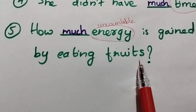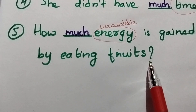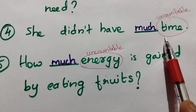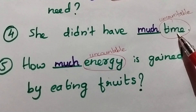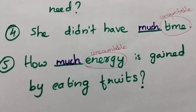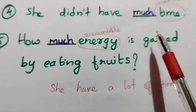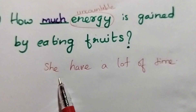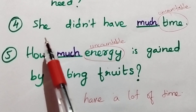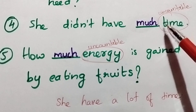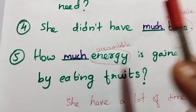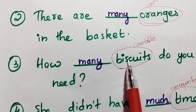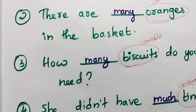During most of the time, 'much' is used in negative or interrogative sentences. 'How much energy is gained by eating fruits?' is an interrogative sentence, so 'much' is used. 'She didn't have much time' is a negative sentence — 'much' is used there too. When the sentence is positive, you'd say 'she has a lot of time,' but in negative form: 'she didn't have much time.' So much is used mostly in interrogative and negative sentences.